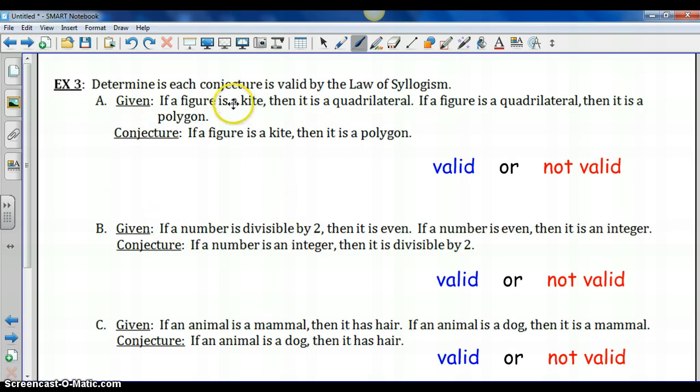So let's see if we can apply that correctly. Here's the first statement we are given. If a figure is a kite, then it is a quadrilateral. Then if a figure is a quadrilateral, then it is a polygon. So we have this chain of logic. We start with a figure being a kite, then say it's a quadrilateral. Then we apply that conclusion as a hypothesis in the next statement. If a figure is a quadrilateral, then it is a polygon. So the conjecture says our original hypothesis, if a figure is a kite, leads us to our final conclusion, it is a polygon. This is a valid use of the law of syllogism.